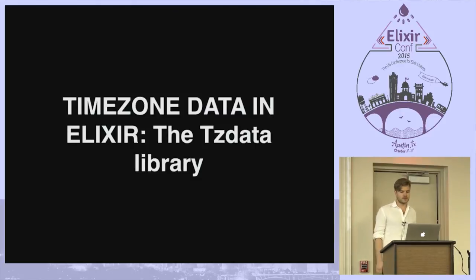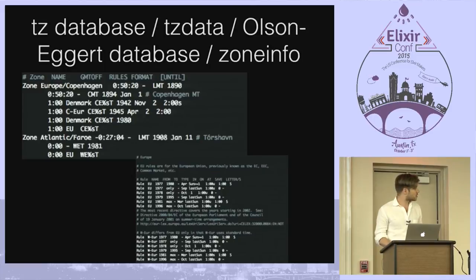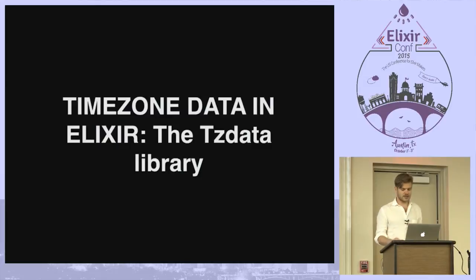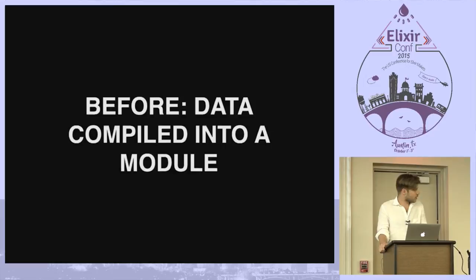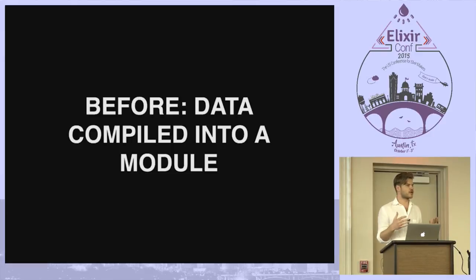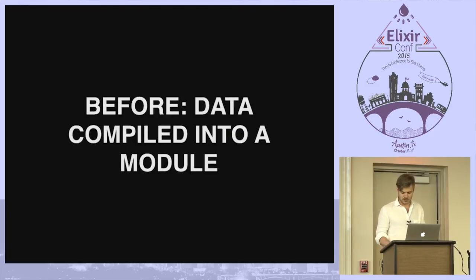In Elixir, I made a library called tzdata that makes all this data available. It's basically text files, and the library parses that and makes it available. Before, it was compiled into a module — it worked a bit like how Elixir handles Unicode, where you have text files and then compile functions that become hard-coded data you can access quickly. But there were problems: if you had less than two gigabytes of memory, it could crash during compilation because it was very intensive, and it took a bunch of time to compile.